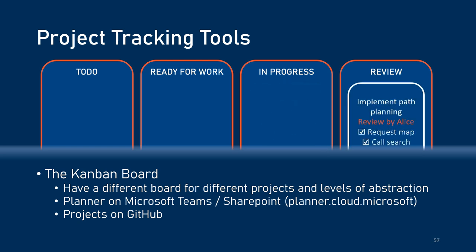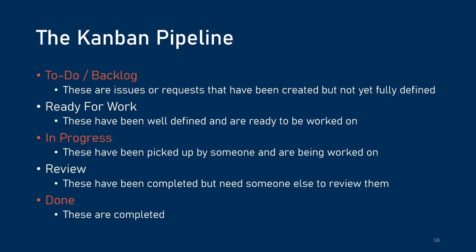Now that Bob's completed it all, it ends up in the Review bin where someone else like Alice could review Bob's implementation. Overall, Kanban-like pipelines tend to go from To-Do, Ready for Work, In Progress, Review, and Done. But the core ones you see most often and the default setting in Planner is To-Do, In Progress, and Done.